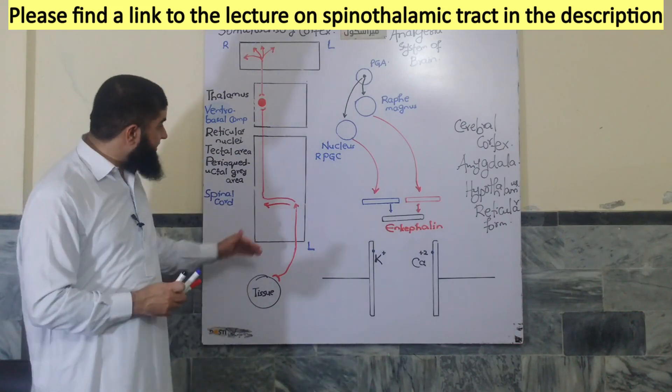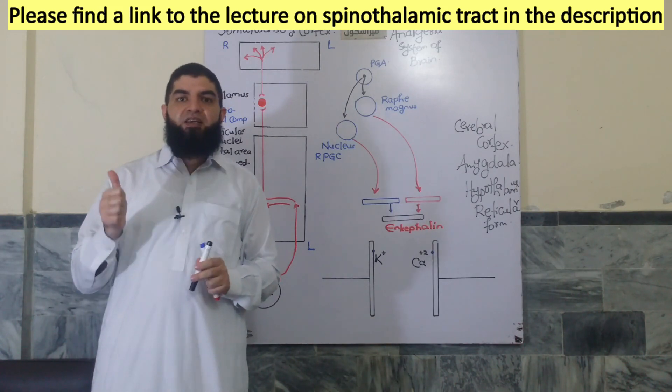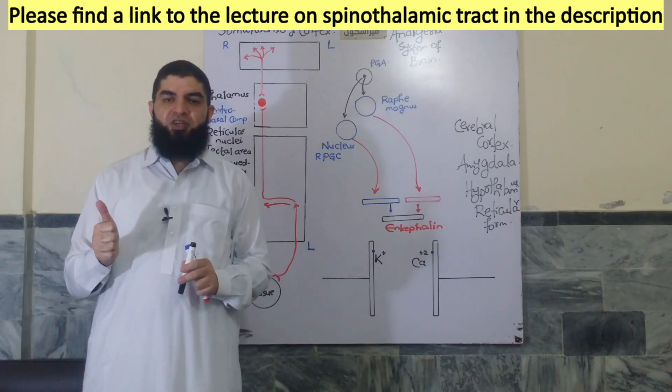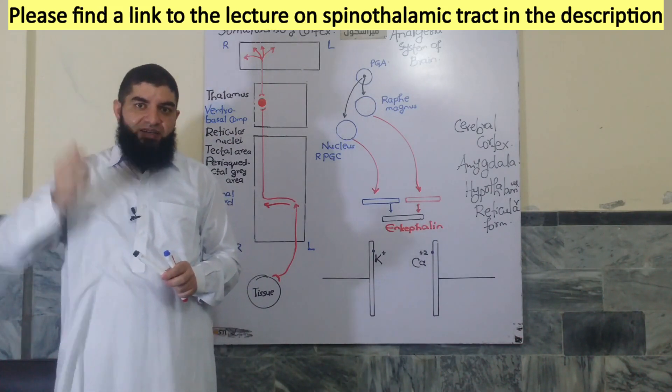The spinothalamic tract as shown in this part of the diagram transmit the sensations of pain, temperature and crude touch from different parts of the body all the way to the cerebral cortex, to the sensory cortex.